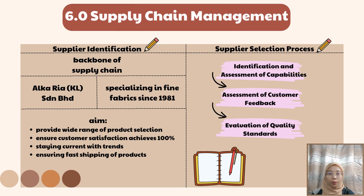I will continue with supply chain management. A business needs reliable suppliers because they are the backbone of the supply chain — without them, the chain will not work effectively. In order to obtain high quality fabric material, we will purchase from Alcaria Sandran Berhad, who specialize in fine fabric since 1981. They aim to provide a wide range of product selections, ensure 100% customer satisfaction, stay current with trends, and ensure fast shipping.